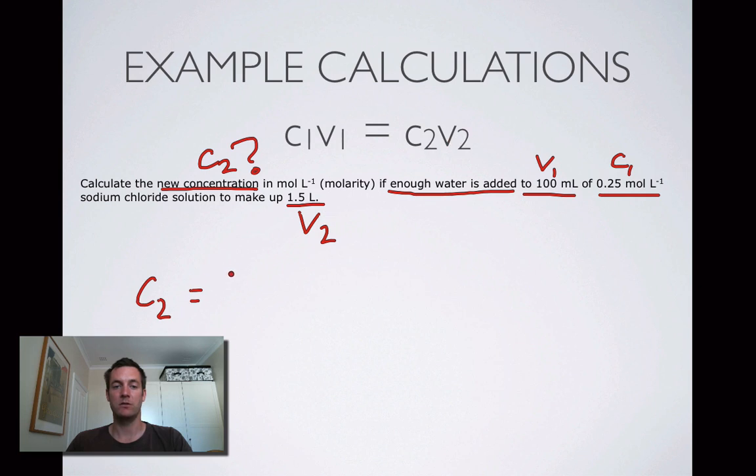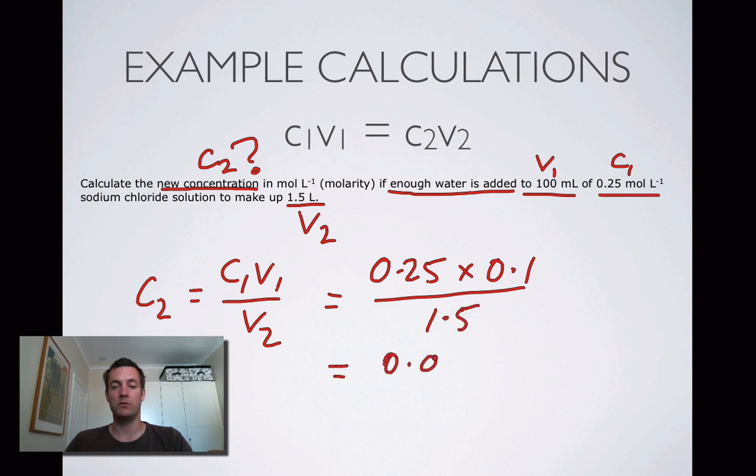C2 equals C1V1 over V2. We just divide both sides by V2 and put some numbers in here: C1, 0.25 times 0.1, and that equals 0.025 divided by 1.5, and that equals 0.017, or 0.016 recurring, but 0.017 will do for our purposes, moles per liter. And that's our new concentration, that's what we were asked to find.